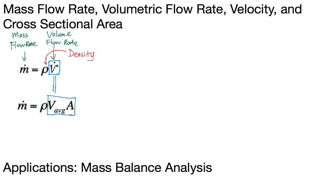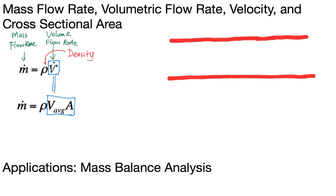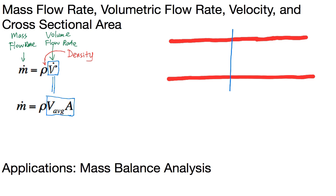We are going to show these relations in a duct flow example. Here I have drawn a duct — this is the axial cross-section of the duct showing the walls in thick red lines. Then I'm going to find a cross-section in this duct flow. I have drawn a cross-section in blue, and I'm going to look at the velocity distribution of the fluid flow in this cross-section.